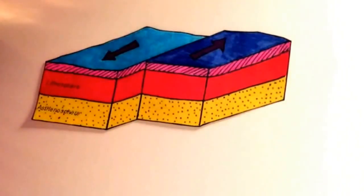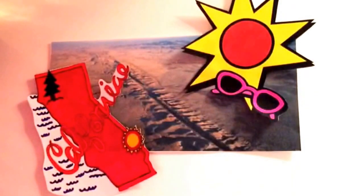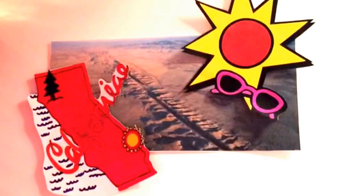Transform boundaries often result in earthquakes. They can also result in faults, one being the San Andreas Fault, located in California, that was formed between the North American plate and the Pacific plate.